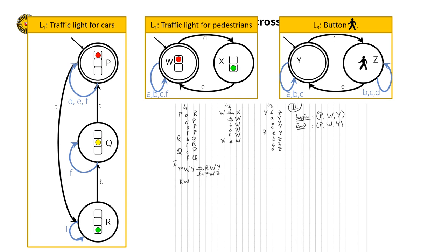The next state is R, W, Y. In R, W, Y, action B leads R to Q, W to W, and Y to Y — so B is enabled. I can also do an F: R leads to R, W leads to W, and Y leads to Z with F. So from R, W, Y I get transitions via B to Q, W, Y and via F to R, W, Z.